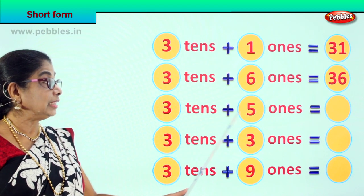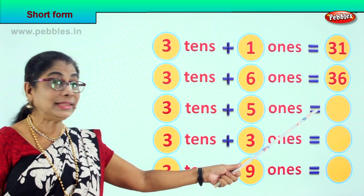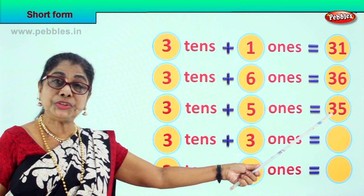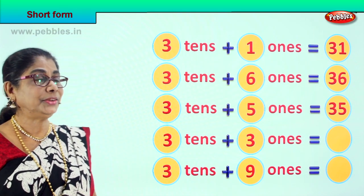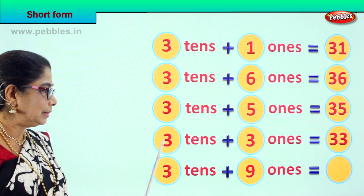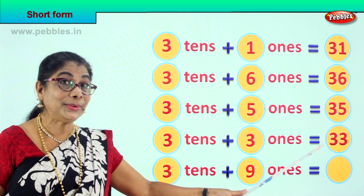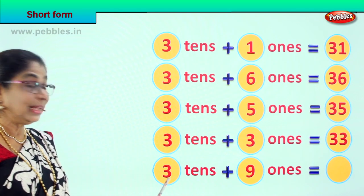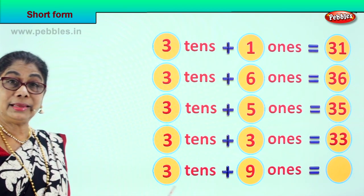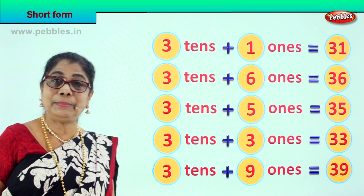Three tens plus five ones — that is thirty plus five — three tens plus five ones is equal to 35. Three tens plus three ones is equal to thirty plus three, which is 33. Then three tens plus nine ones — thirty plus nine — three tens plus nine ones is equal to 39.